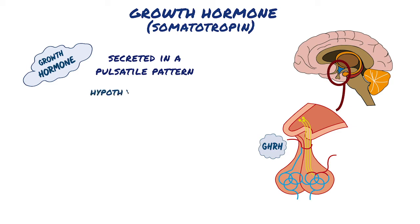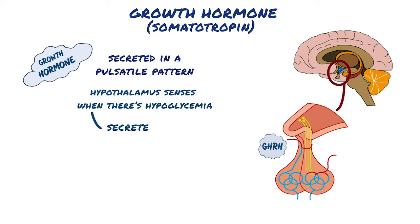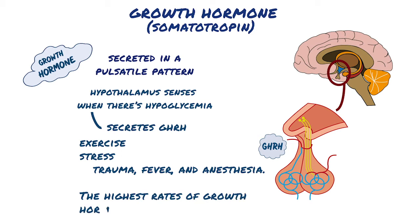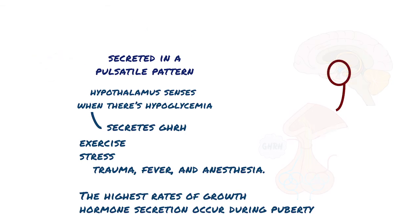For example, the hypothalamus senses when there's hypoglycemia, or low blood sugar, and in response it secretes growth hormone-releasing hormone. Other stimuli for secretion are exercise and various forms of stress including trauma, fever, and anesthesia. The highest rates of growth hormone secretion occur during puberty, which is responsible for the growth spurt.